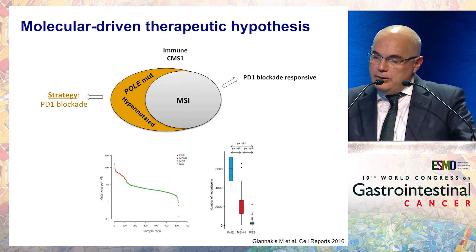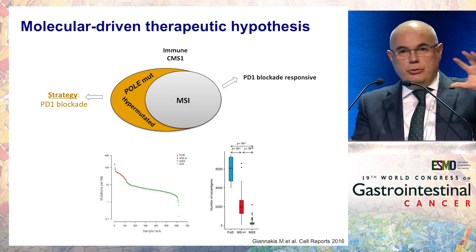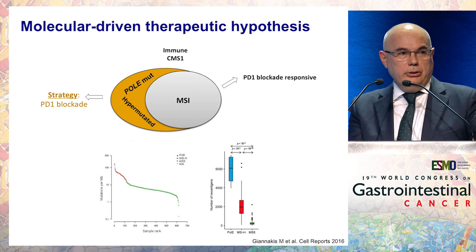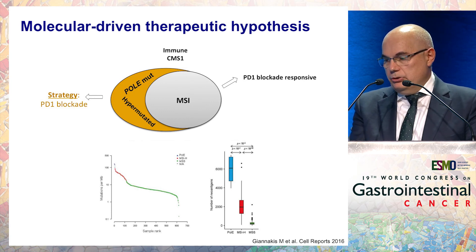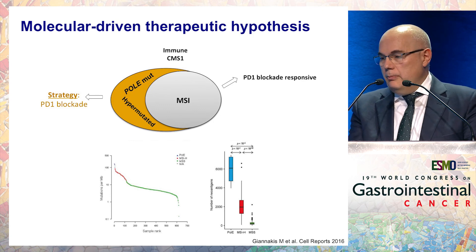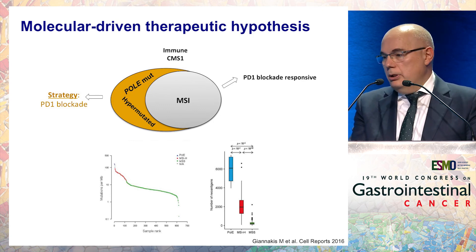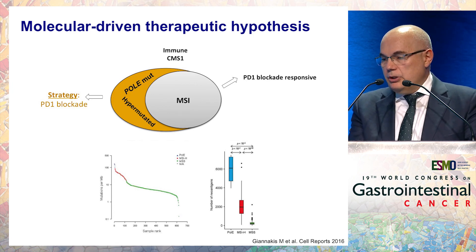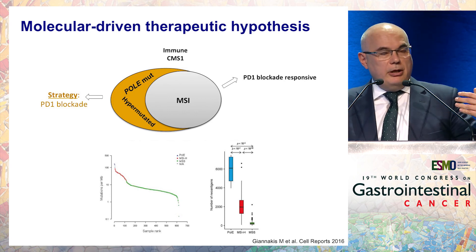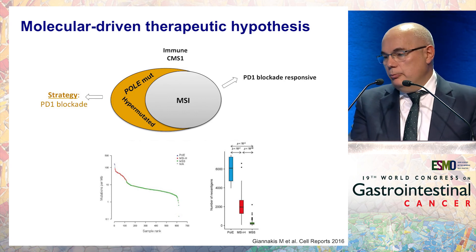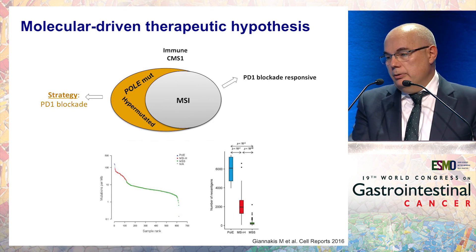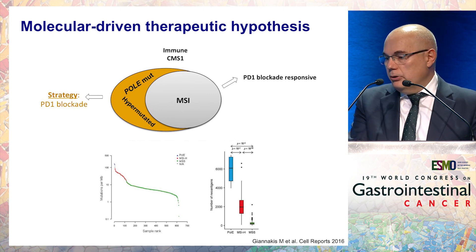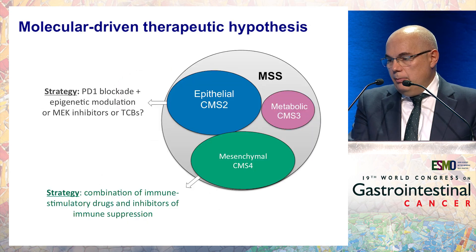To sum up: for the CMS1 subgroup — the immune-hot group — most patients will have mismatch repair deficiency and MSI status, and we know most of them benefit from PD-1/PD-L1 blockade. There are also other mechanisms that can produce an MSI-like or hypermutated status, such as POLE mutations, and we think these patients may also benefit from PD-L1 inhibitors — something currently being evaluated.